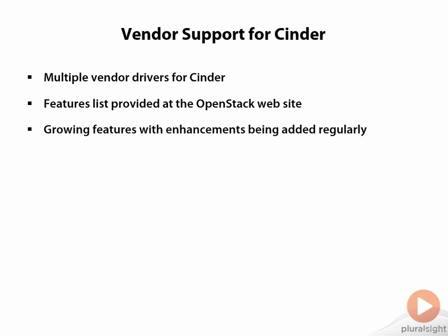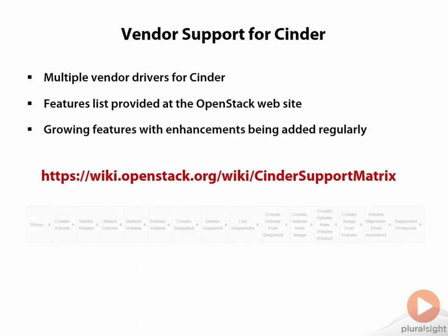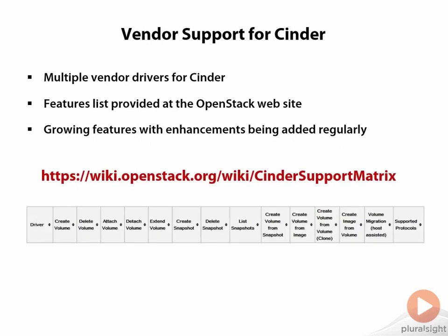Because of the growing list of features and enhancements happening in OpenStack all the time, it's a good plan to go back and visit fairly regularly. This is easily done by going to wiki.openstack.org and then looking up the Cinder support matrix. You'll see the actual header of the table of information there. It's going to list each driver and all of the different Cinder features inside the project, whether they're supported on that particular driver, and also what version of OpenStack they became supported under.